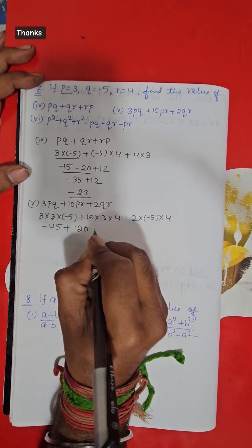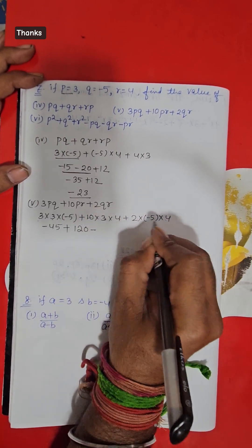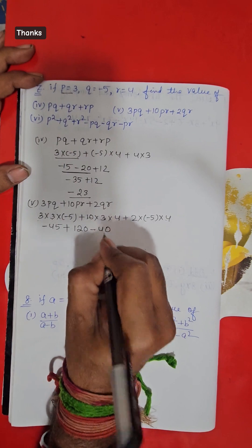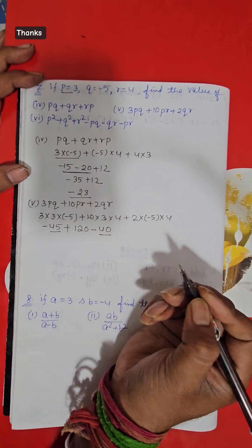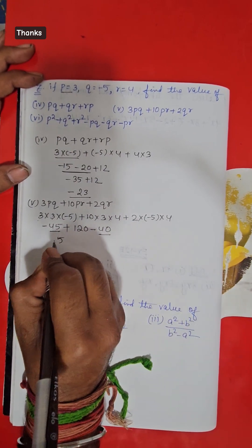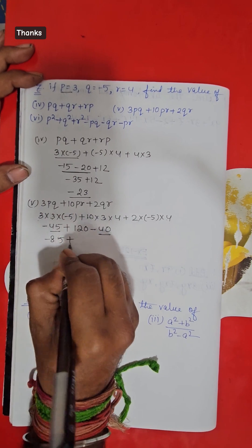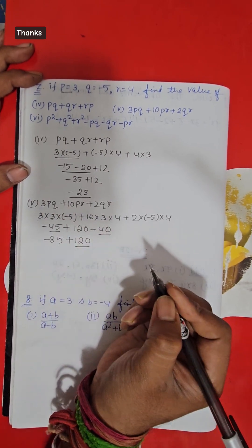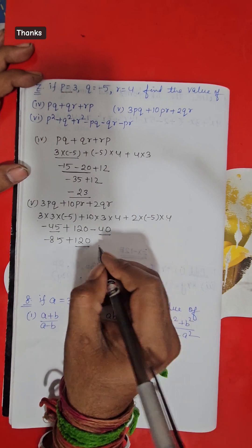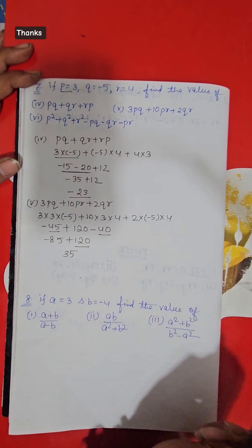Now that will be minus, so 2 into minus 5 into 4 is minus 40. Now adding these two numbers: minus 45 minus 40 is minus 85, plus 120. Obviously 120 is the bigger number, so the answer is 35.